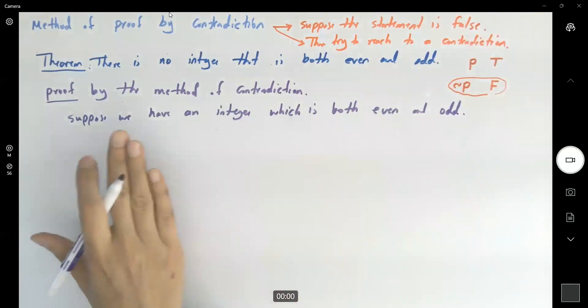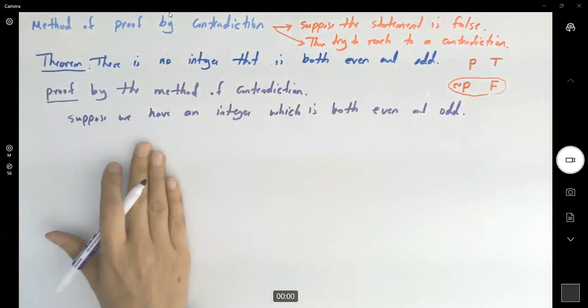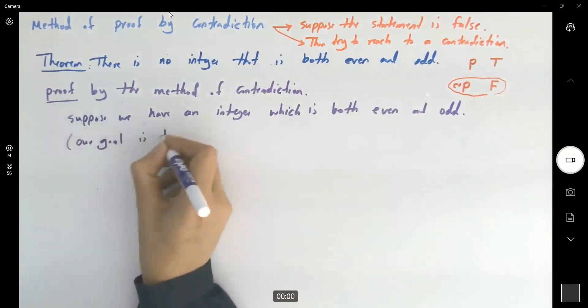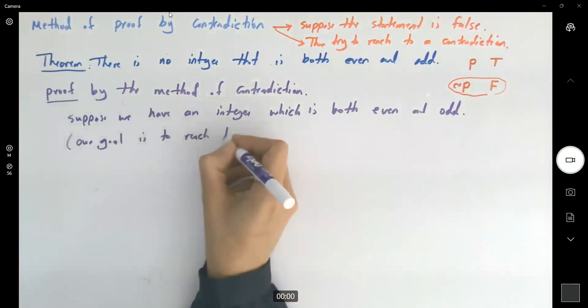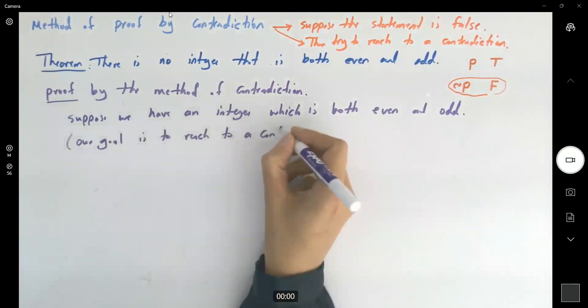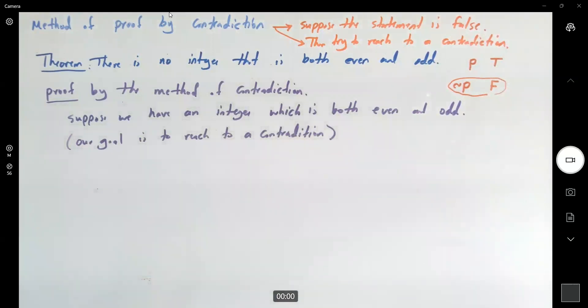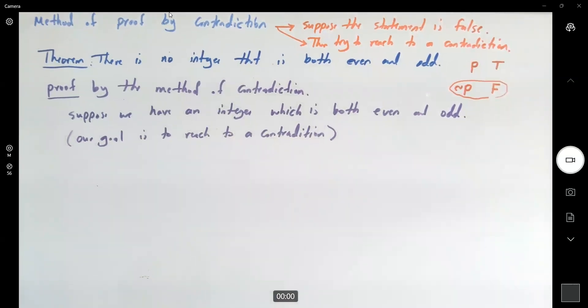Now we try to reach to a contradiction. We try to show that this statement is false. So our goal is to reach to a contradiction. From algebra point of view, from definition point of view, somehow, some contradiction.